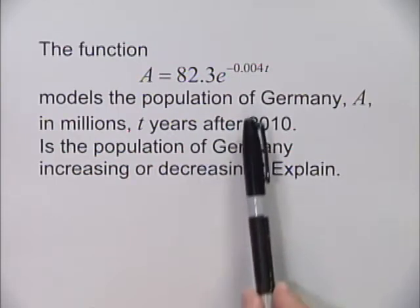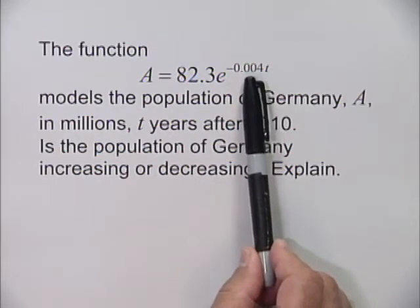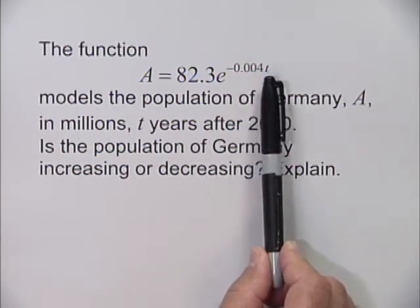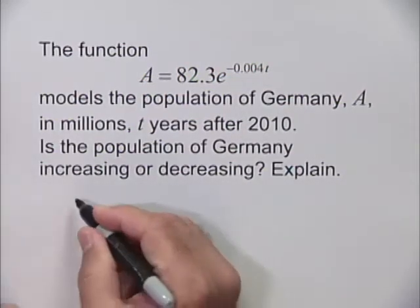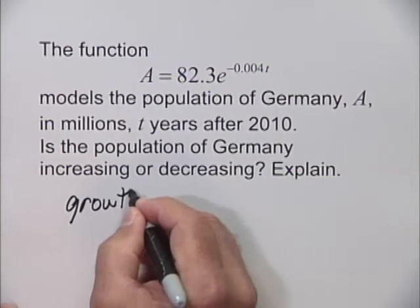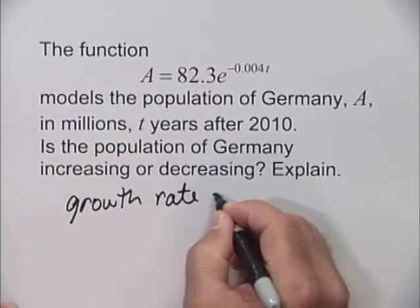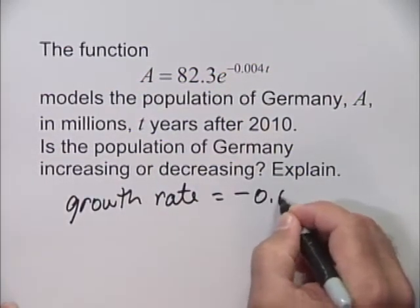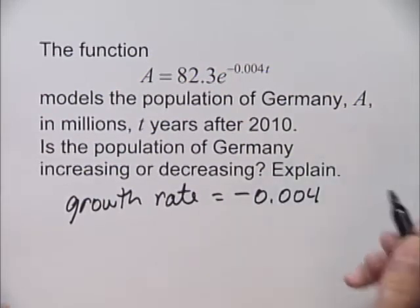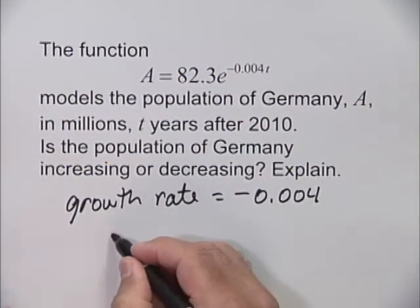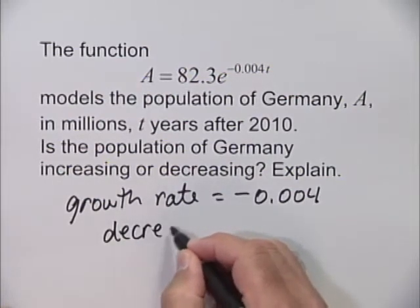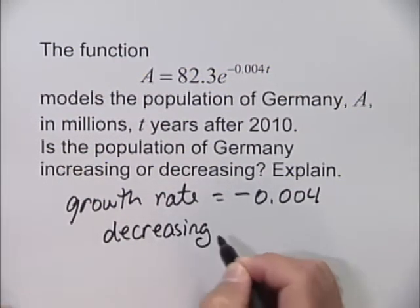The growth rate constant is the coefficient of t, which equals negative 0.004. Since it is negative, that indicates the population is decreasing.